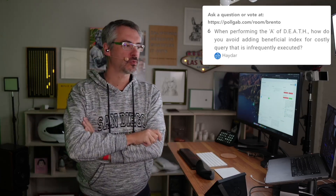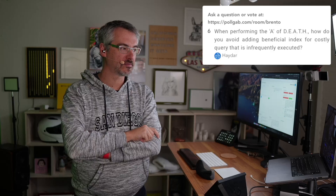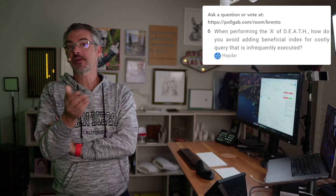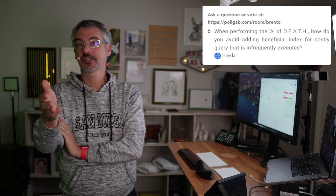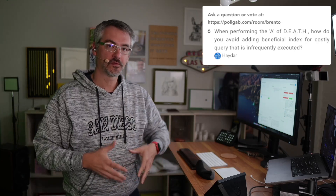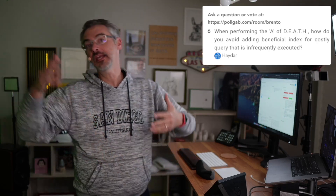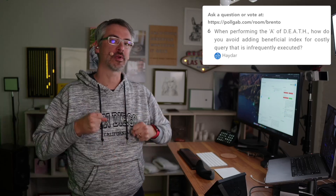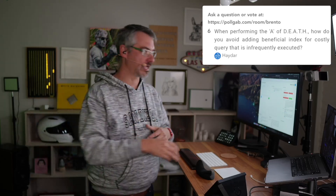Haydar asks: when I'm performing the A part of the death method, how do I avoid adding beneficial indexes for costly queries that are infrequently executed? If a query isn't frequently executed, it shouldn't get an index. The database is tuned for things that we do regularly, but if you want to do something irregular every now and then, we can't afford to performance tune the database for that because it makes everything else go slower.